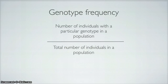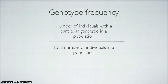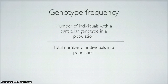Genotype frequency is the number of individuals with a particular genotype in a population divided by the total number of individuals in a population. Using the same flower example — 100 plants, 49 red, 42 pink, 9 white — if we look for the frequency of CWW, the genotype for white flower plants, we take the 9 plants with genotype CWW over the total of 100, which equates to 0.09 or 9%.